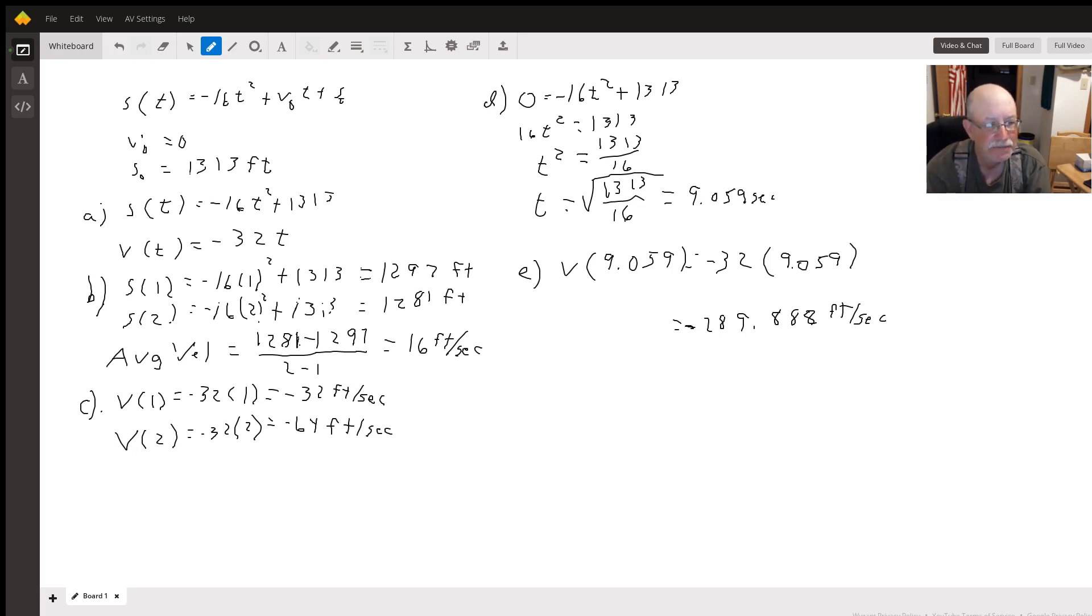So our position function s(t) is going to be -16t² + 1313. Then we take the derivative of that to get the velocity function. So we take 2 times -16, which gives us -32, and we reduce the exponent by one, so we end up with -32t.